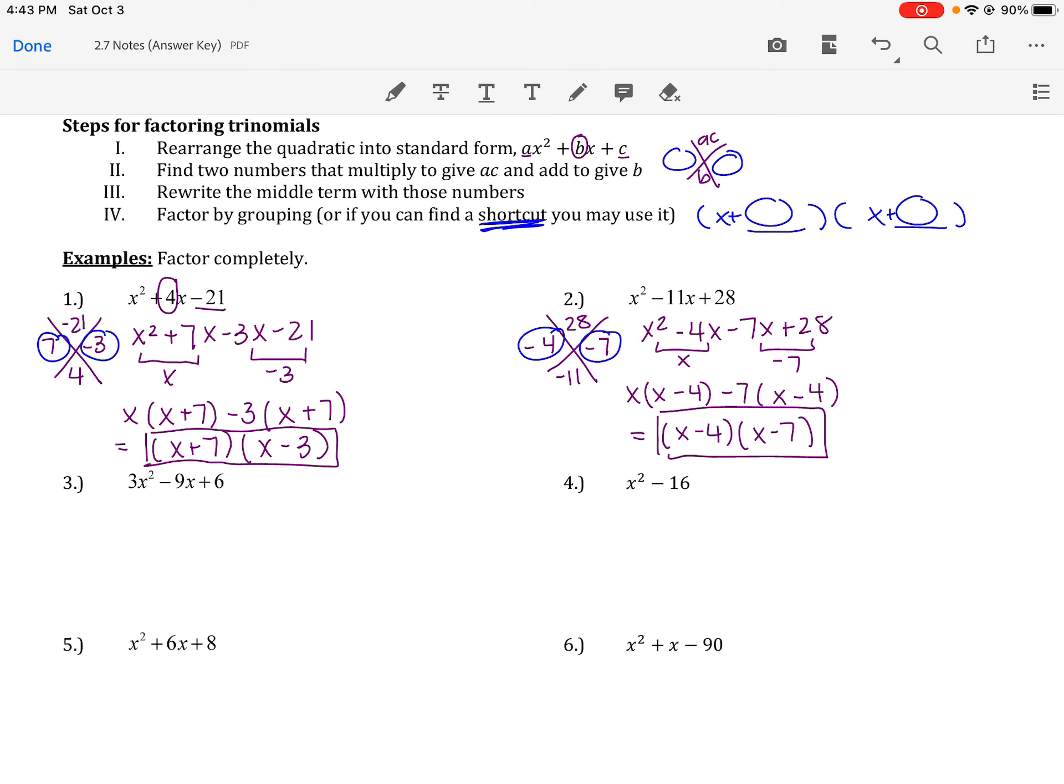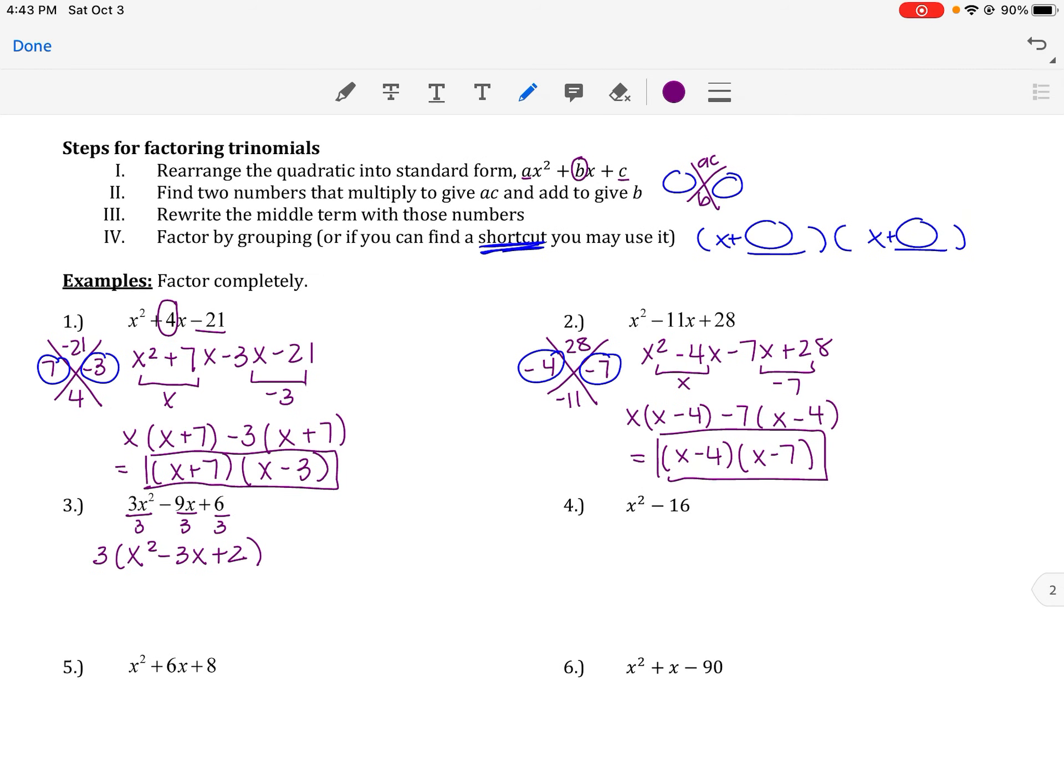This next one you'll notice we have a 3 out front. Remember I said always look for a GCF. If you've got 3x squared minus 9x plus 6, there's actually a 3 that you could take out of each of those. So I'm going to divide each of these by 3. I get x squared minus 3x plus 2. Now we're going to say what multiplies to 2 and adds to negative 3. We do know they both have to be negative, and the only thing I can think about that multiply to 2 are 2 and 1. A negative 2 and a negative 1 does add to negative 3. Let's use our little shortcut. That means it's x minus 2, x minus 1.